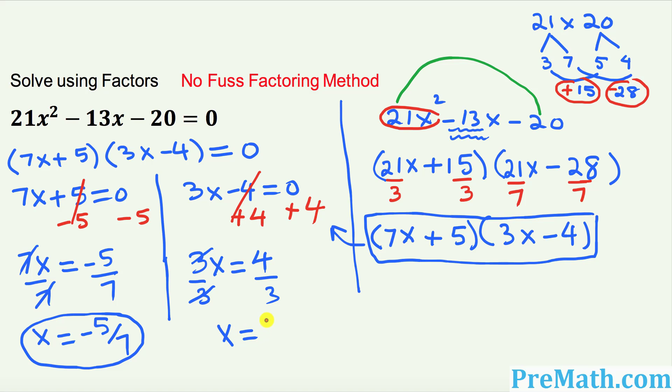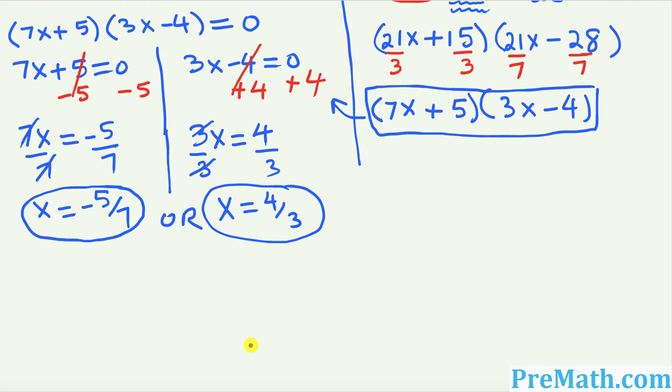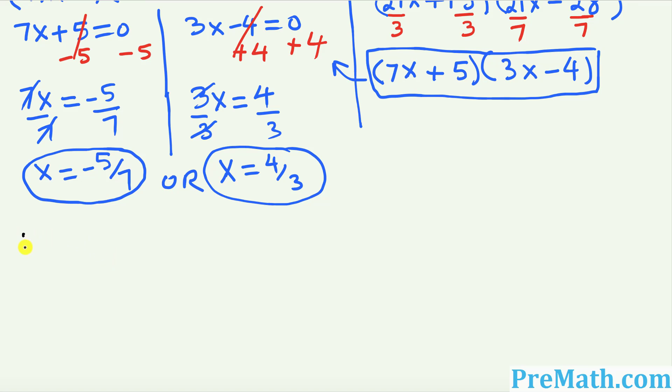So we got two solutions. x equal to negative 5 over 7 or x equals to 4 over 3 is another solution or simply we can write this one. Thus we can say thus our solution negative 5 over 7 comma 4 over 3. And that is our answer. Thanks for watching.